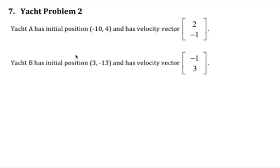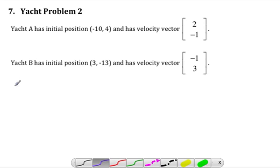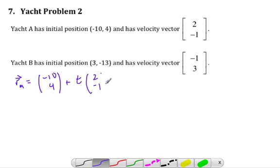Hi, it's Mrs. Flynn and Mr. Rops. We're going to do a yacht problem number two and deal with vectors. So we have yacht A and yacht B doing various things, starting and moving at a certain speed. We can model their path by making lines because they're traveling in straight directions. Let's make our vector equations for yacht A. I'll call it R sub A. The vector is going to be the starting point, negative 10, 4, plus T times our direction vector 2, negative 1. T is time in hours, I believe, but we might change our mind based on what we find later.